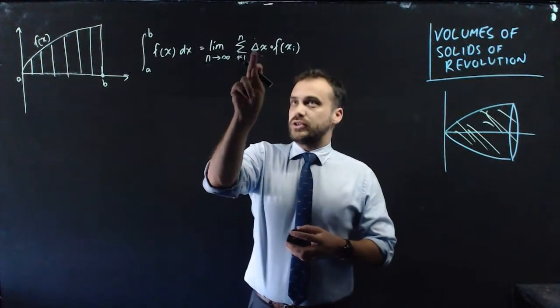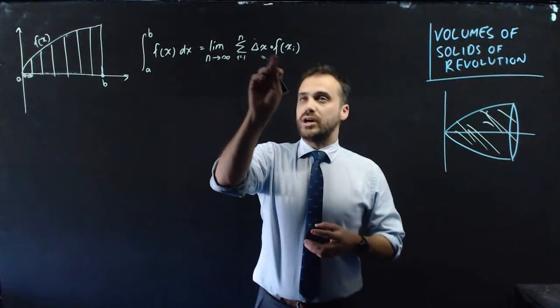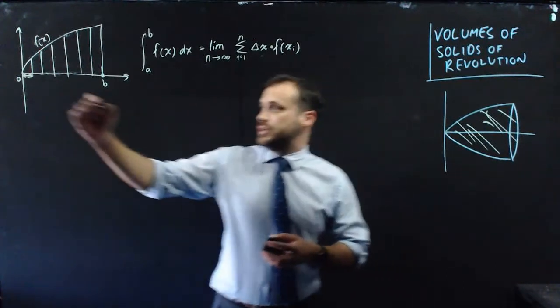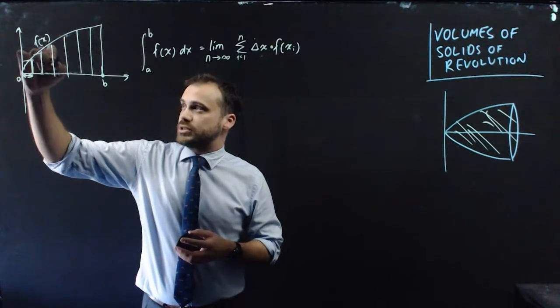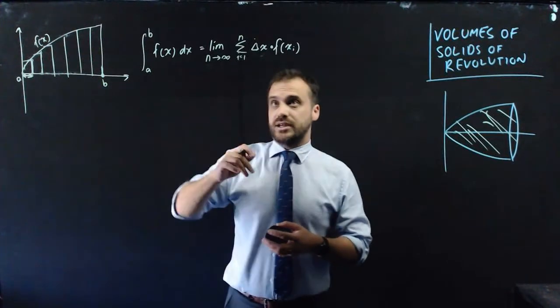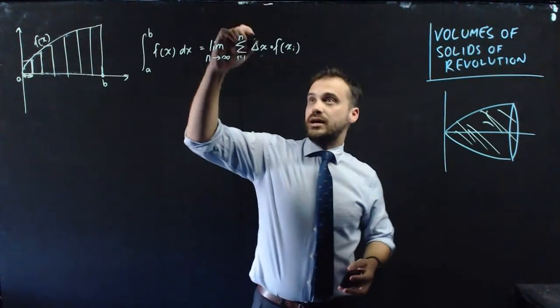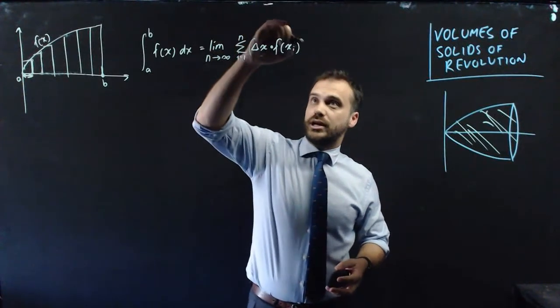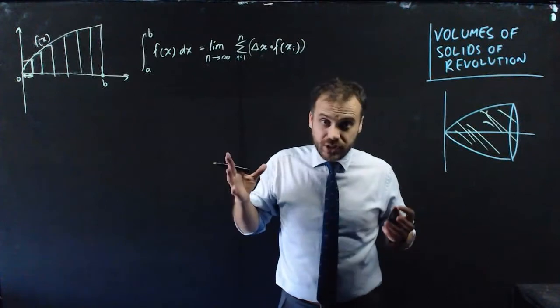The product of the change in x, so the distance from here to here, times f x of i. So times this height, which gives us that rectangle, times this height, which gives us that rectangle, times this height, which gives us that rectangle. What we're doing when we find an integral is finding out the sum of the products of these, the sums of these rectangles, an infinite number of them.